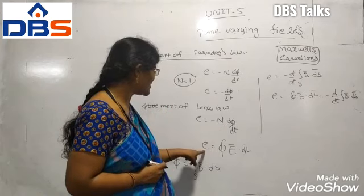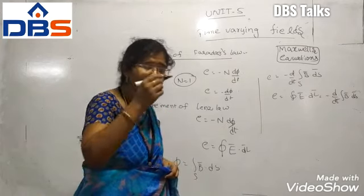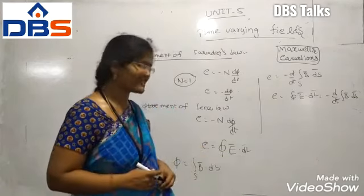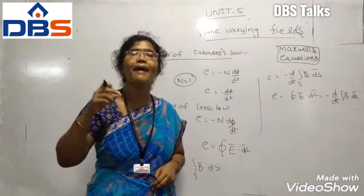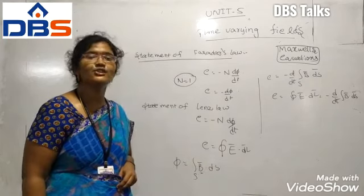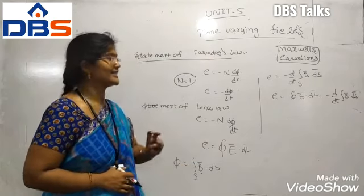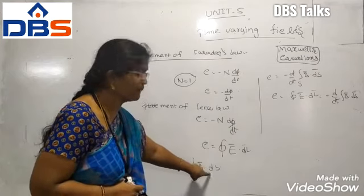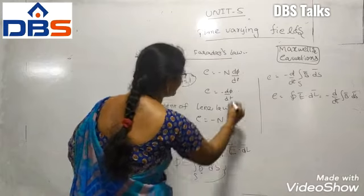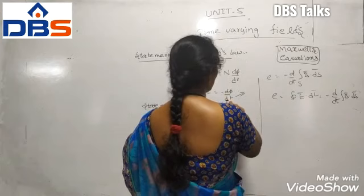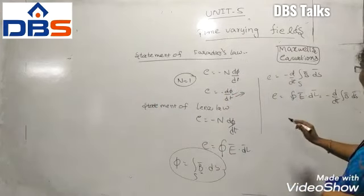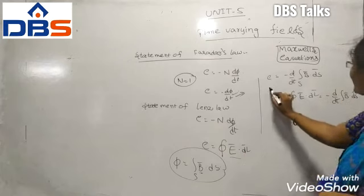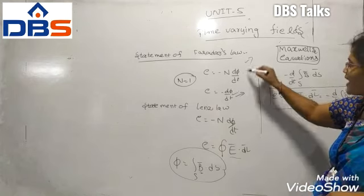E is a voltage produced in a closed path, so here you can apply the line integral: the integral of E-bar dot dL-bar. The flux φ equals the integral over surface S of B-bar dot dS-bar, where B-bar is the magnetic flux density. Since E equals minus dφ/dt, substituting φ gives: the integral of E-bar dot dL-bar equals minus d/dt of the integral of B-bar dot dS-bar. This equation is obtained from both Faraday's law and Lenz's law.